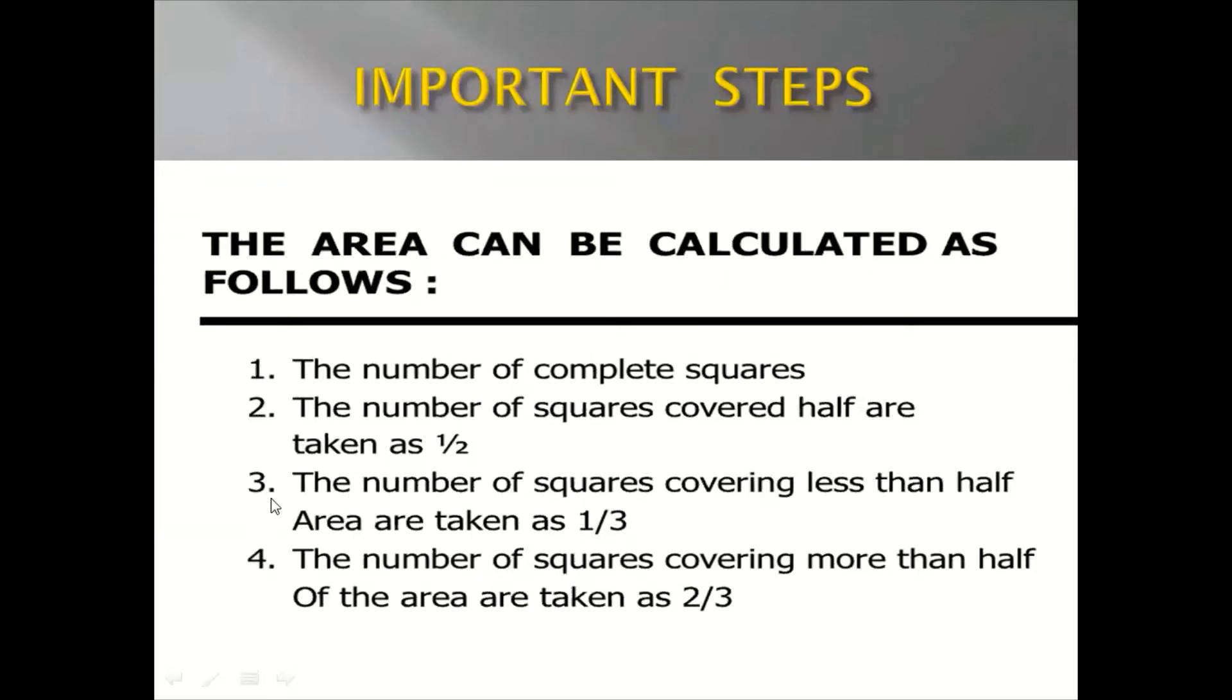In the same way third step you will count the number of grids covering less than half. We write as 1 by 3 and then we will calculate the area.